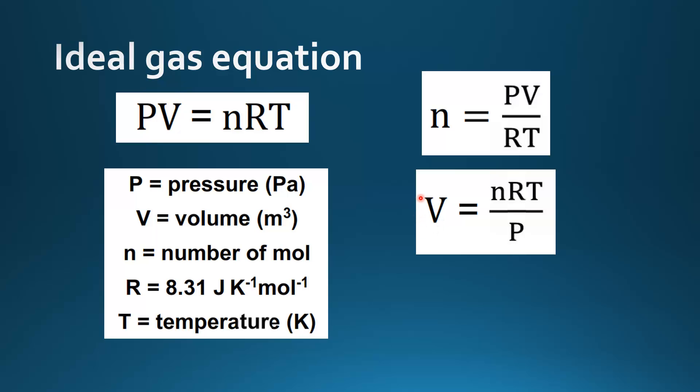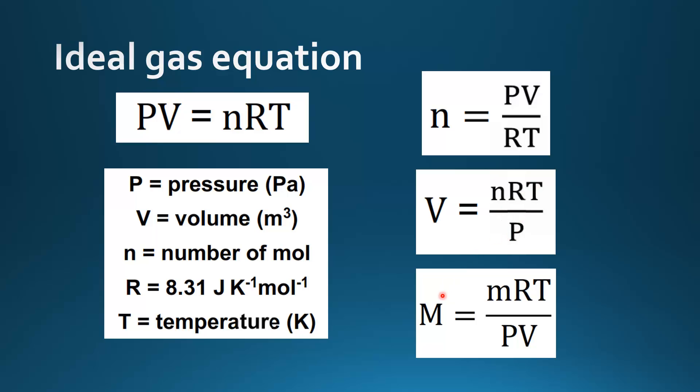It can also be rearranged to solve for V, volume. So V equals nRT divided by P. And also it can be used to calculate molar mass. So M, molar mass, equals the mass of gas times R times T divided by P times V.